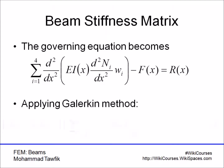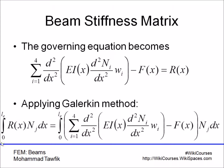We use weighted residual methods to minimize the residue, and the most commonly used is the Galerkin method. We integrate over the whole domain from zero to L, where L is the length of the element, multiplying the residue by each shape function. Since we have four shape functions, we do this four times, obtaining an equation with unknown coefficients (the nodal displacements wᵢ). Repeating this four times gives four equations in four unknowns, yielding the finite element stiffness matrix.